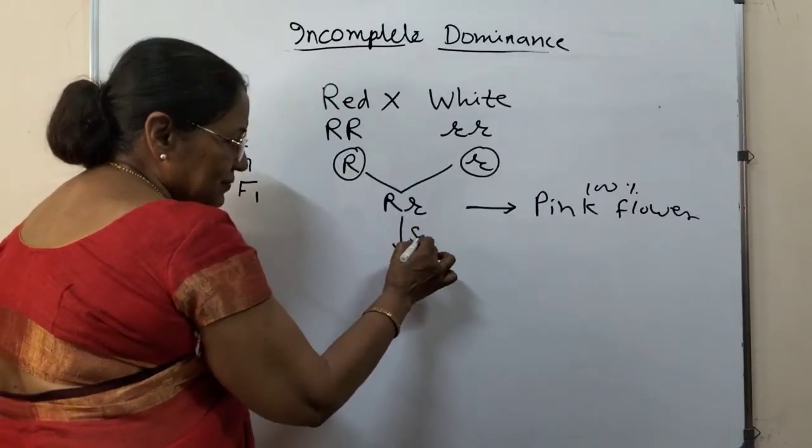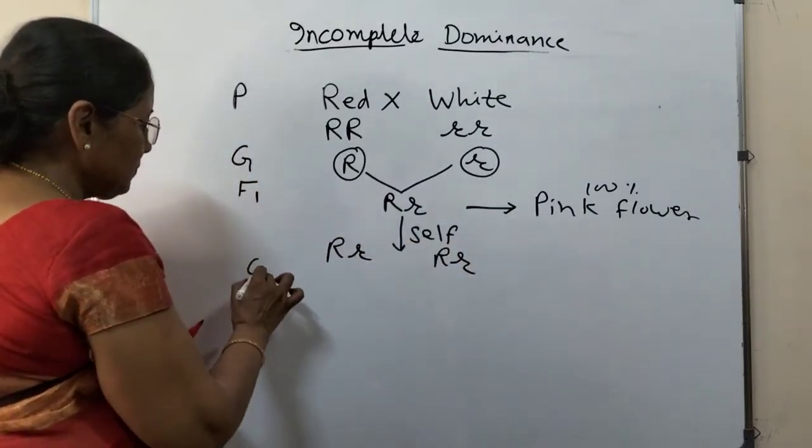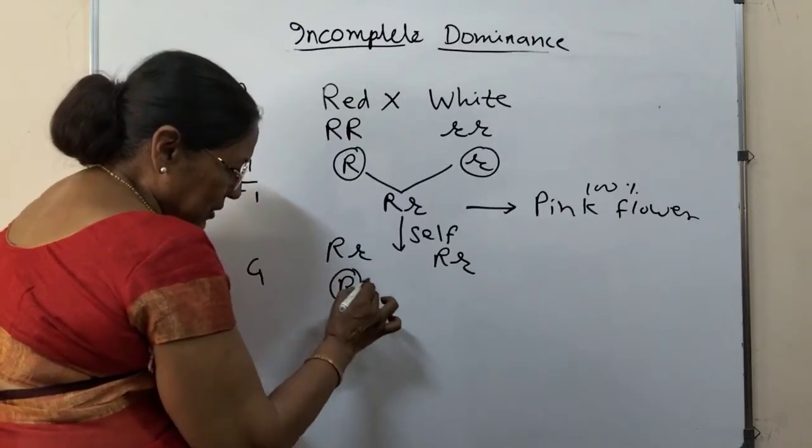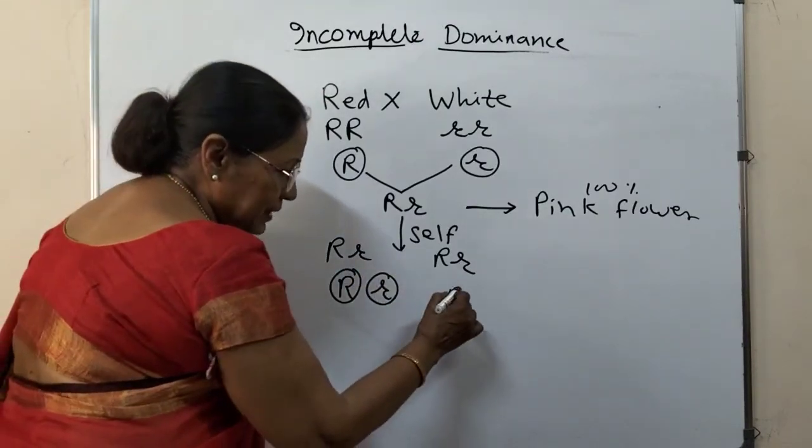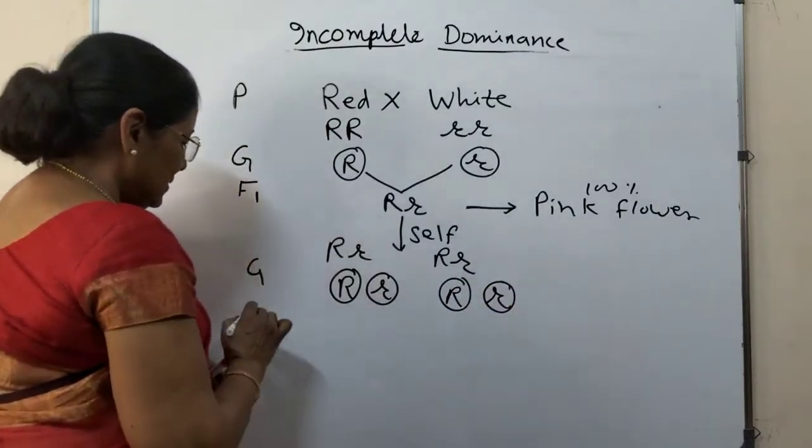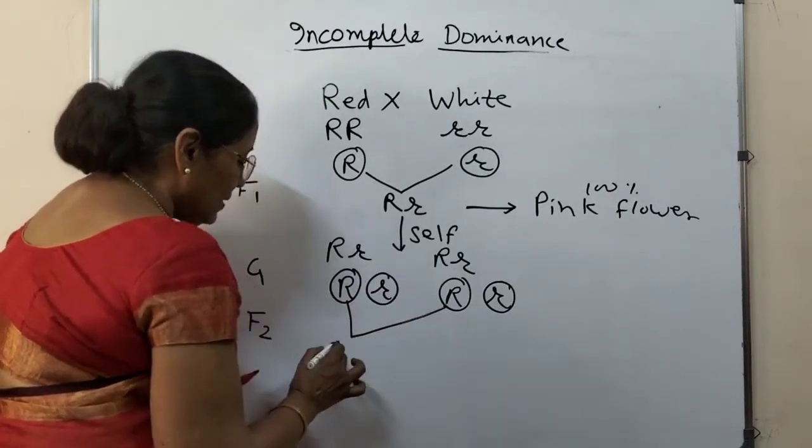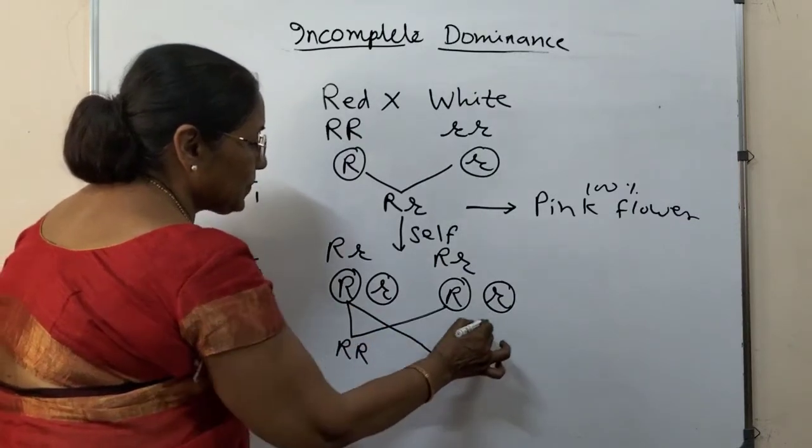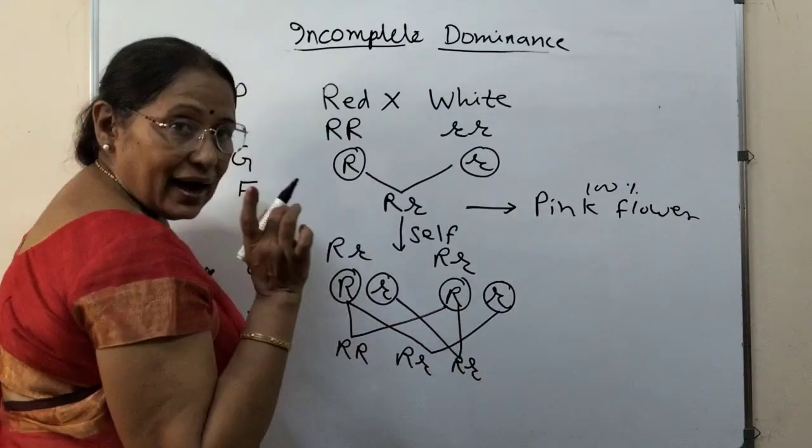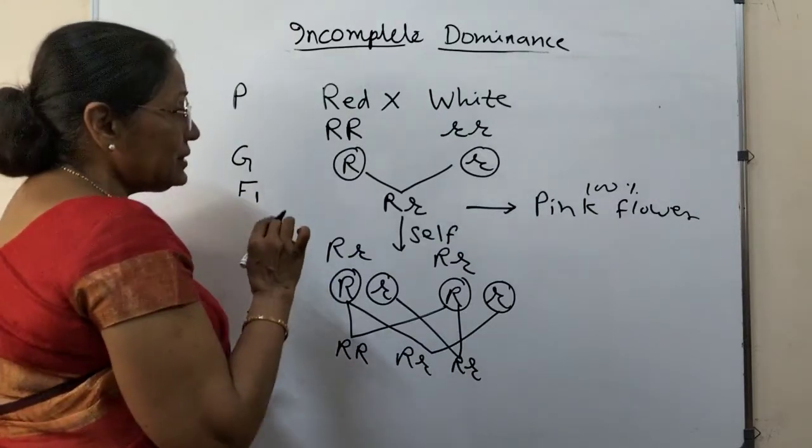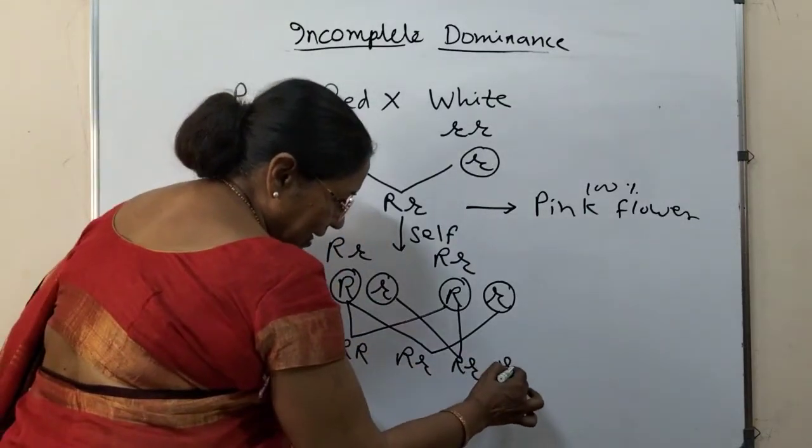Now when we self this one, then they are producing the gametes. These two have separated from each other as per the law of segregation, gametes having only one of the factors. Now they combine in all possible forms to form these four types. Same like what you have done already while studying monohybrid cross—the T letter is simply replaced by R, nothing else.